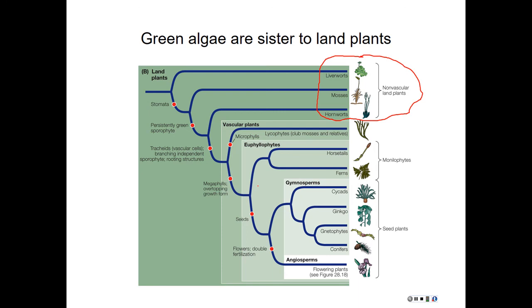There are three phyla we're going to discuss. First, phylum Hepatophyta — the liverworts, where 'wort' means plant. Second, phylum Bryophyta — the mosses. Third, phylum Anthocerophyta — the hornworts. The suffix 'phyta' also refers to plant, so if you see a phylum name ending in 'phyta,' it's a good clue that it's a plant.